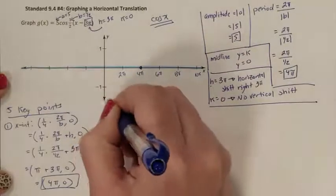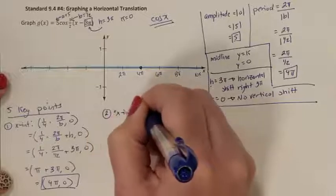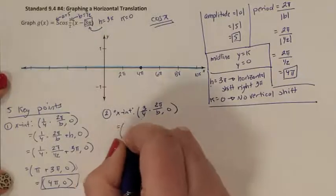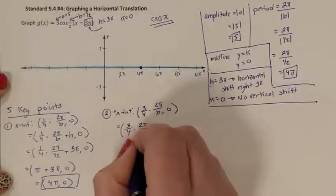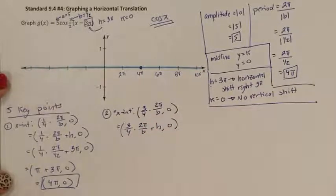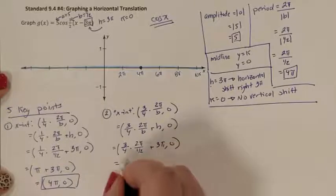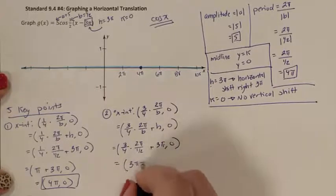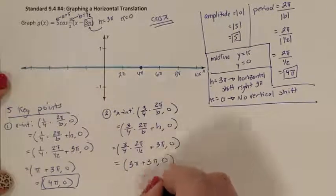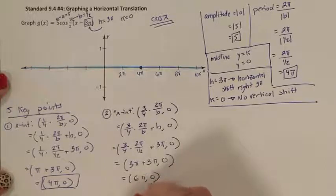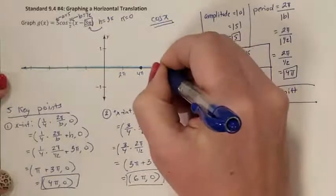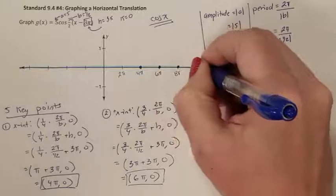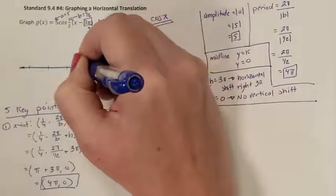My second x-intercept formula also needs to account for the h value shift. My b is one-half, and solving that part gives me 3 pi; then adding the other 3 pi for the shift gives me 6 pi, 0 as my second x-intercept. Those are my x-intercepts, and we need to make sure they are represented all the way through the x-axis.